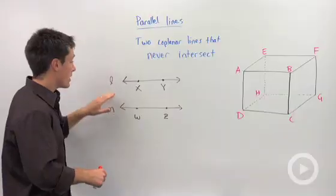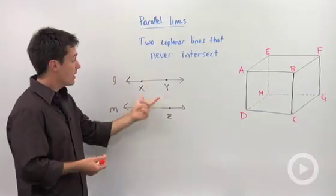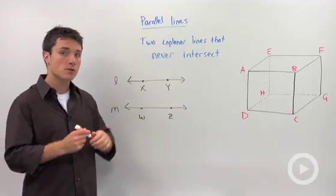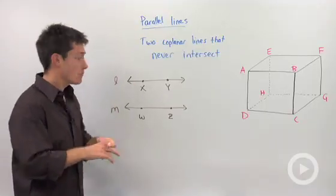So if we had line L and line M, or I could say line XY and line WZ, and if I told you they're parallel, first thing you're going to do is mark them. The way that you mark parallel lines is by using arrows.